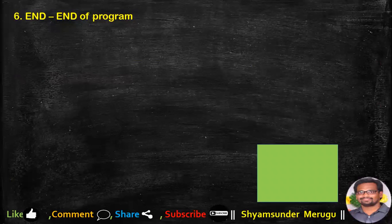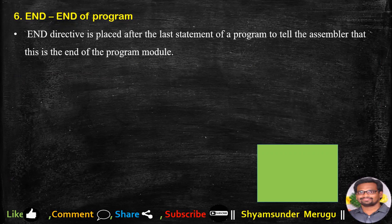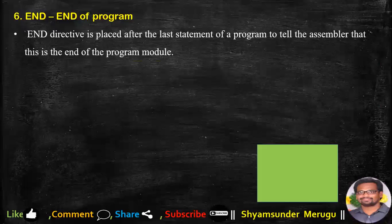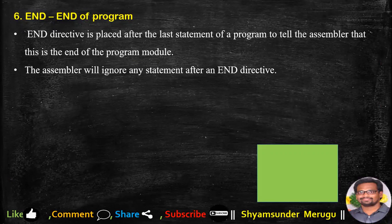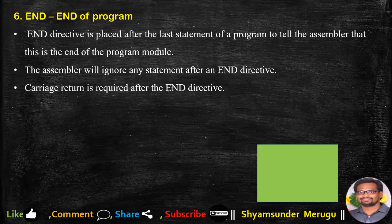Another assembler directive is END, which stands for the end of the program. The END directive is placed after the last statement of a program to tell the assembler that this is the end of the program module. The assembler will ignore any statements after an END directive. A carriage return is required after the END directive.